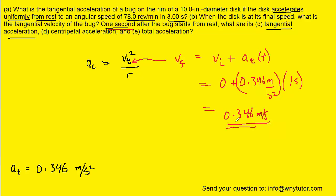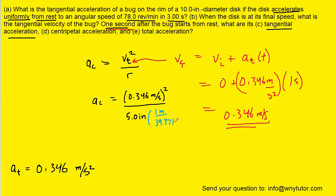We take that value for the tangential velocity, square it, and divide by the radius — remembering to convert the radius from inches into meters using 1 meter = 39.37 inches. We should get roughly 0.943 meters per second squared for the centripetal acceleration.